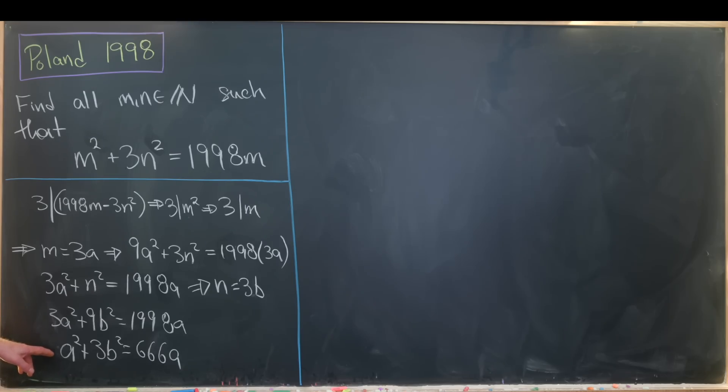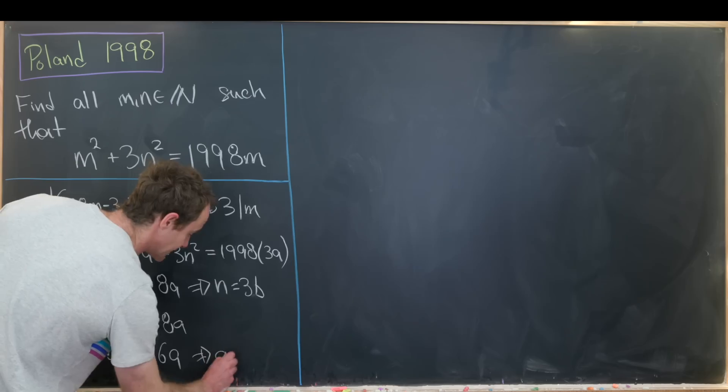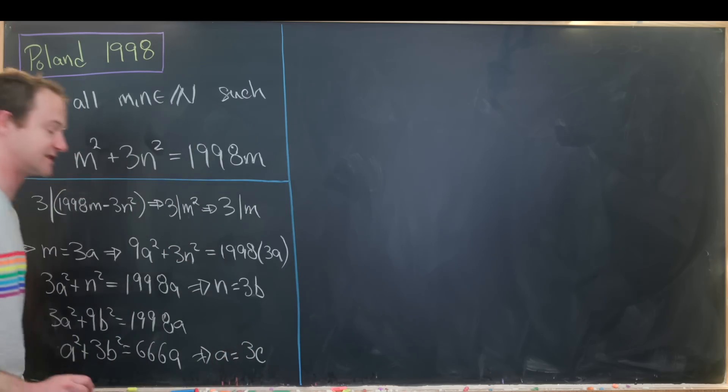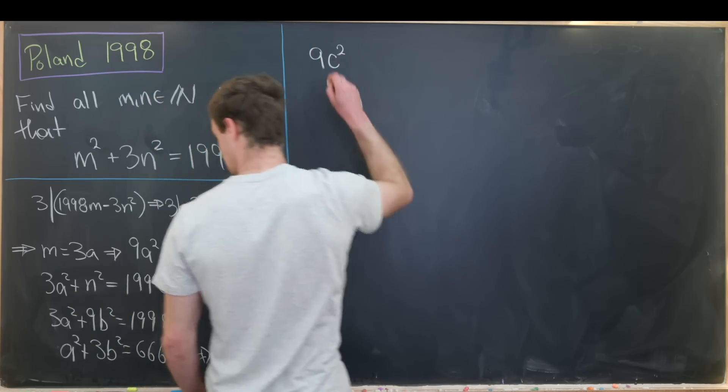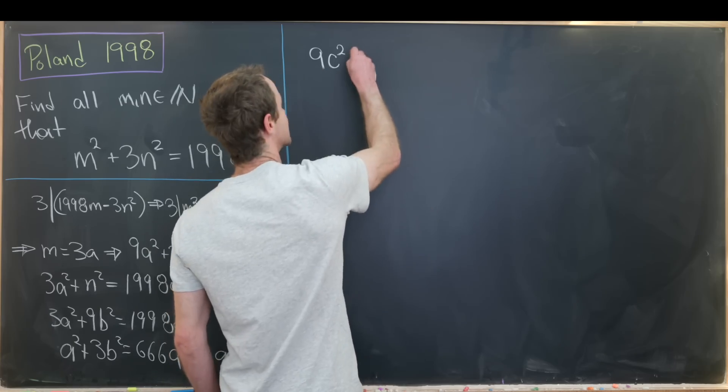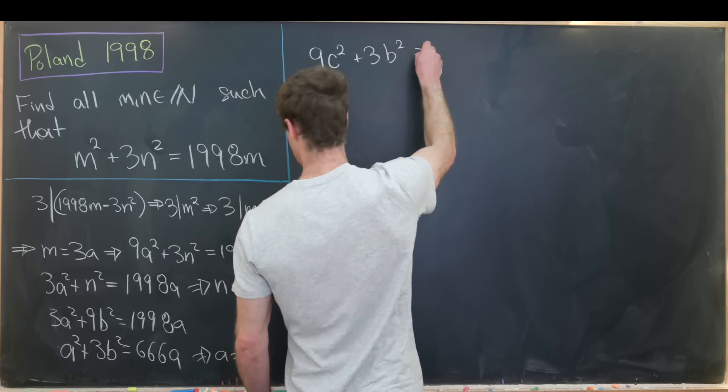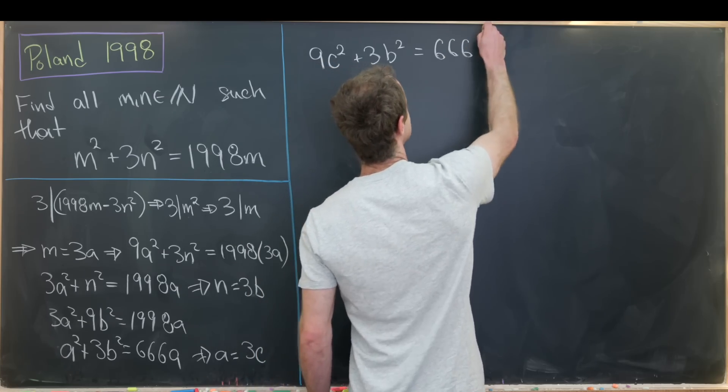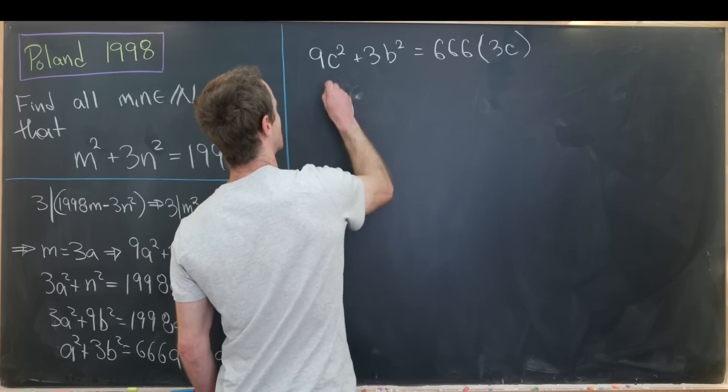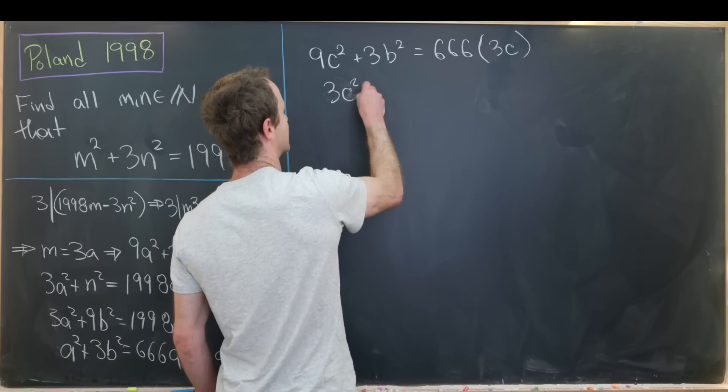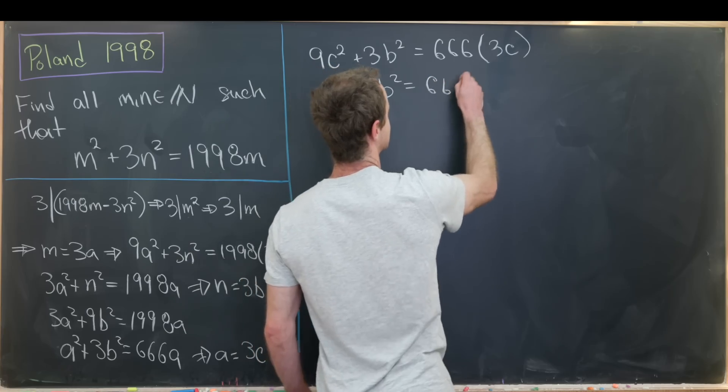So now we can play the same game again. This is a multiple of 3. 666 is also a multiple of 3. So that means a is a multiple of 3. That means we can write a as 3 times c. And then looping that back into the original equation gives us 9 times c squared plus 3 times b squared equals 666 times 3c.